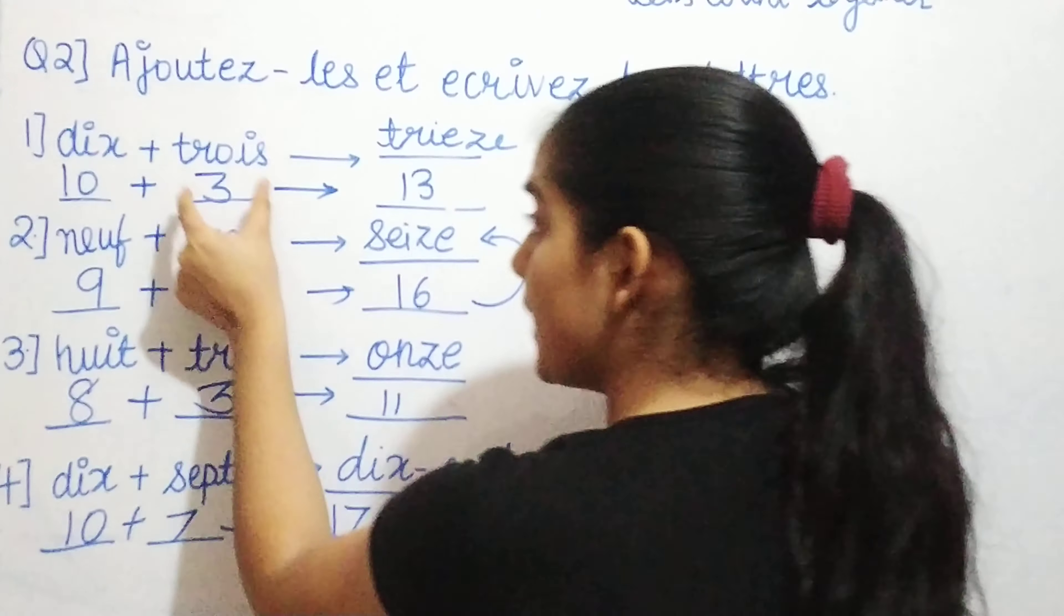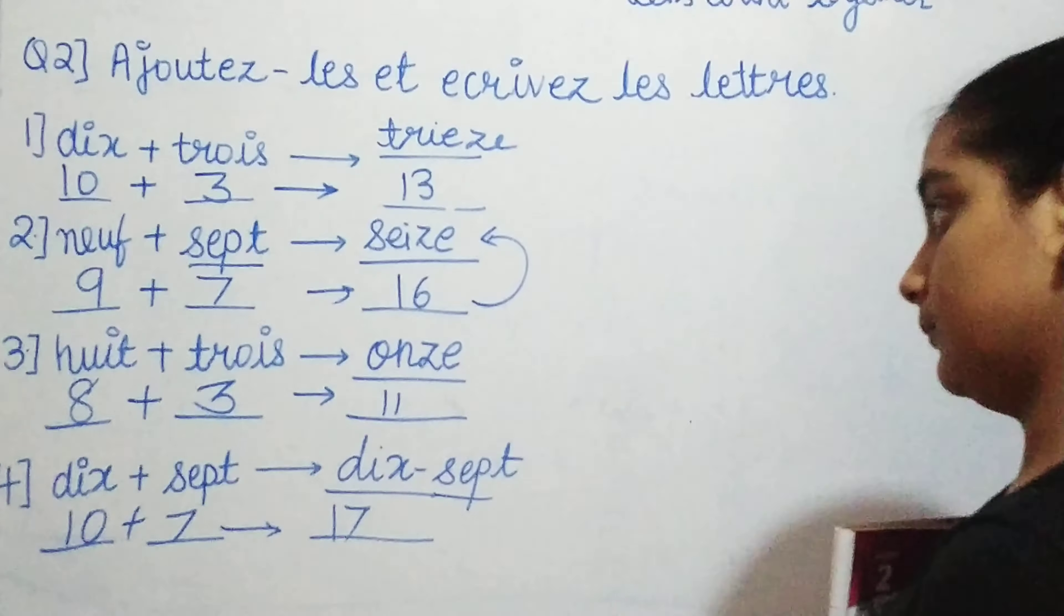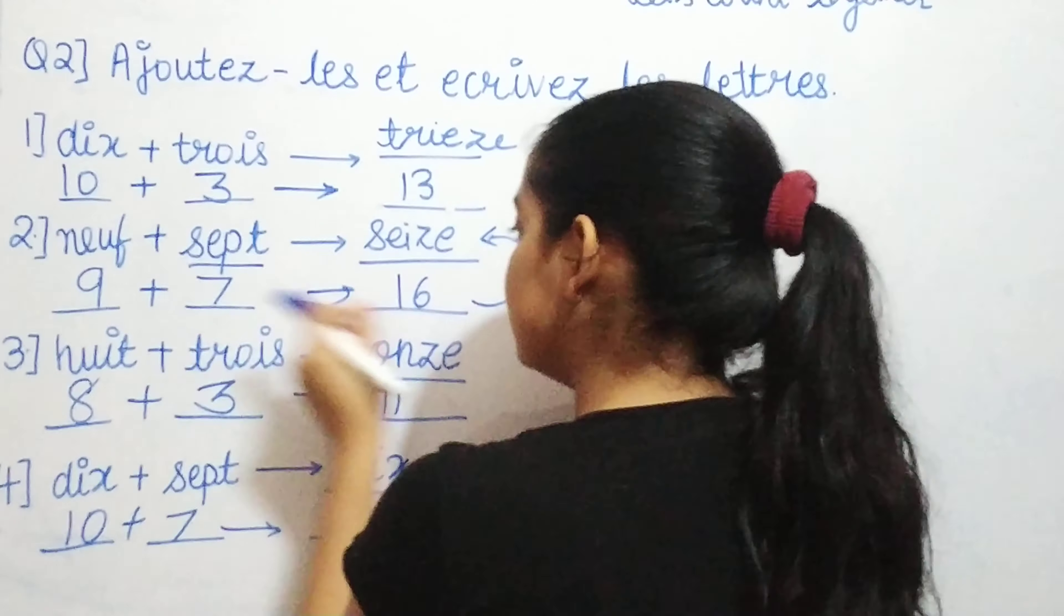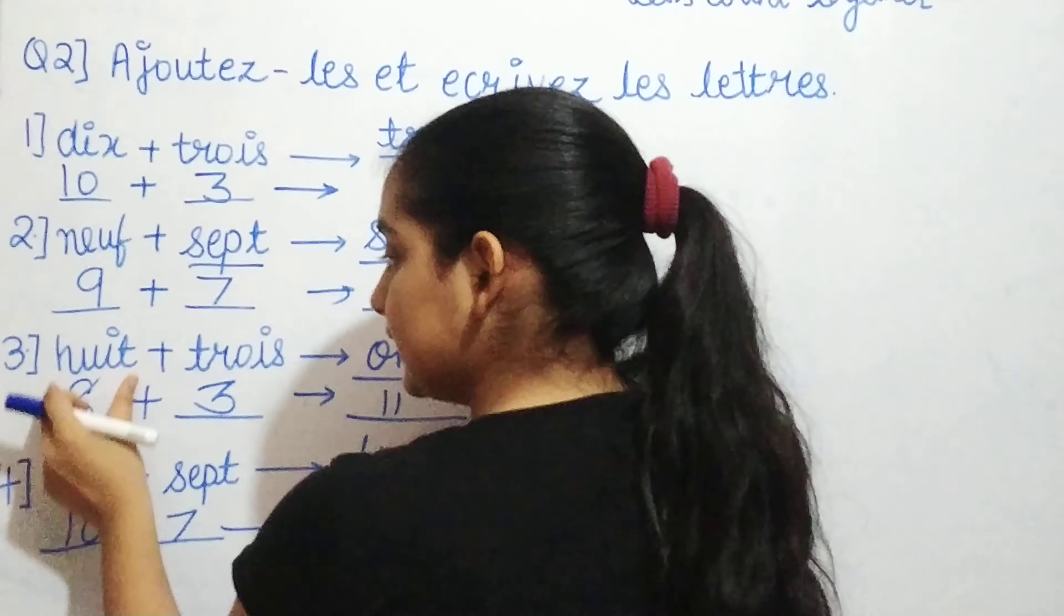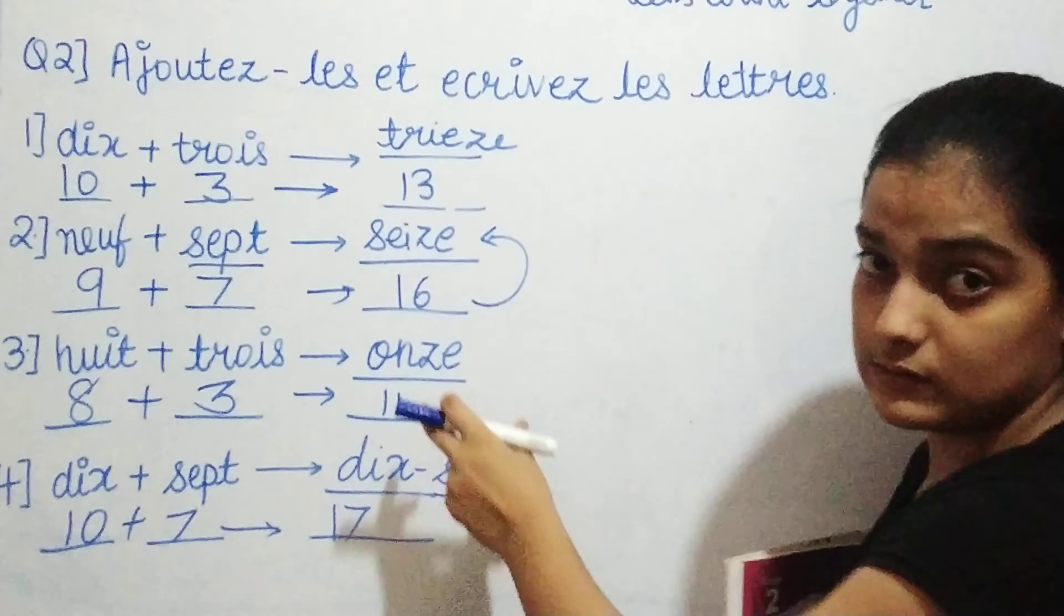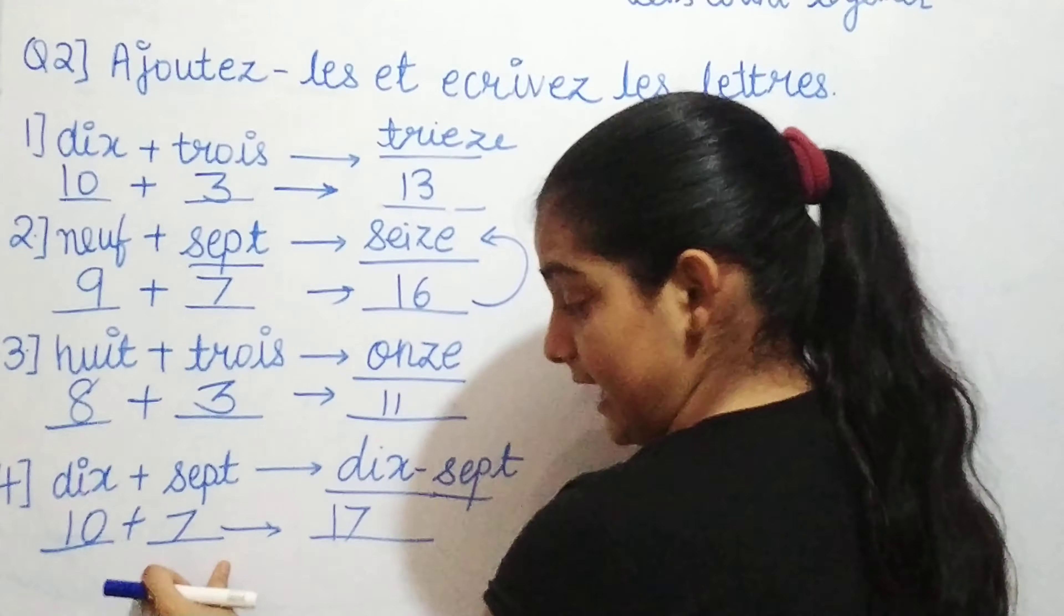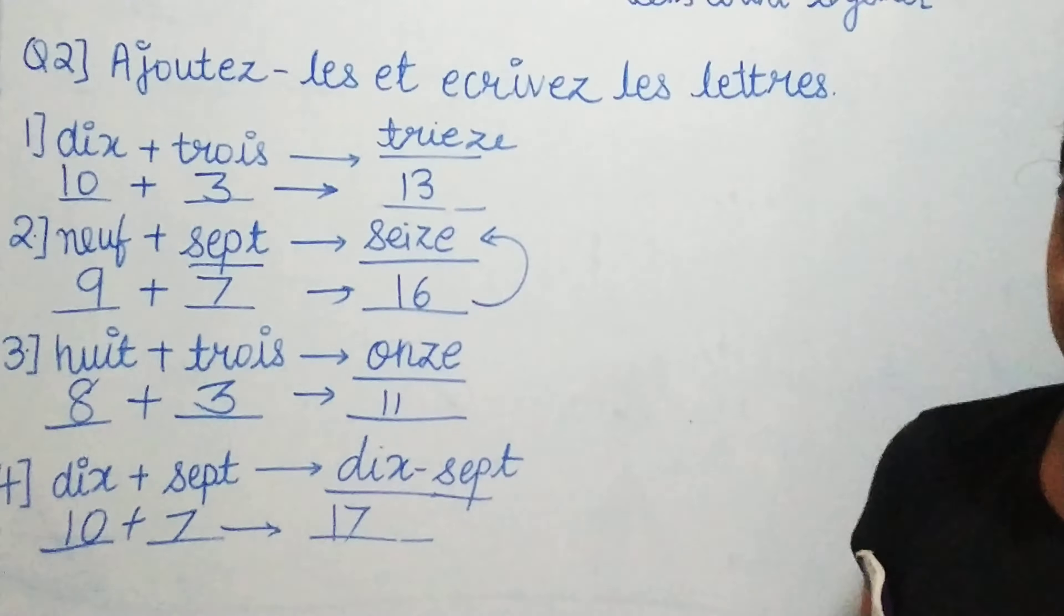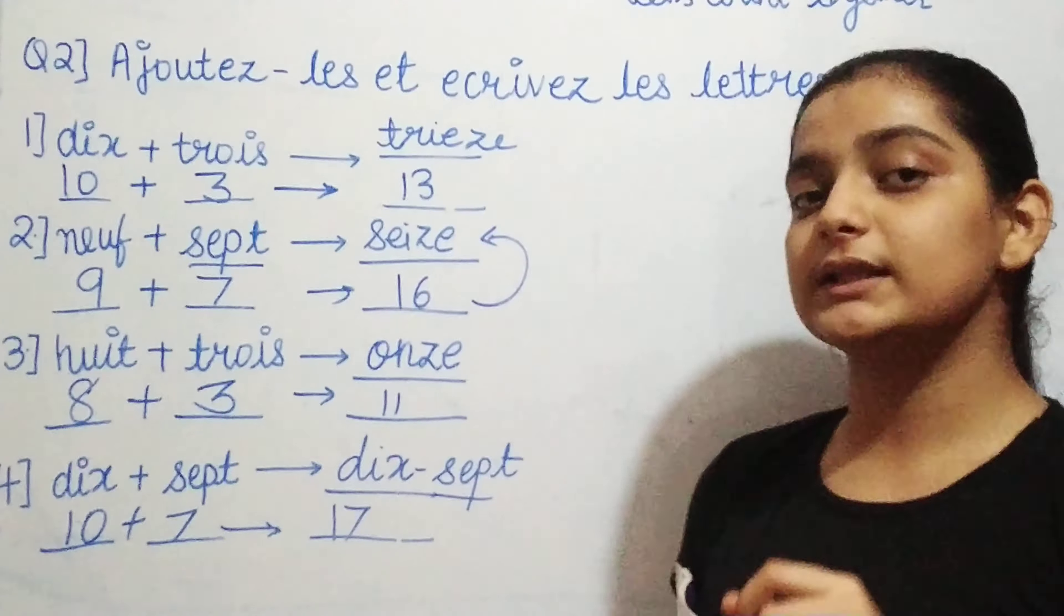So let's revise what we just saw. Dix is 10, trois is 3. When we add them, we get 13, that is treize. Next is neuf is 9, sept is 7. When we add them, we get 16, which is seize. Huit is 8, trois is 3. When we add them, we get 11, that is onze. And dix is again 10, sept is 7. When we add them, we get 17, that is dix-sept. I hope this question number 2 was also very clear to you.